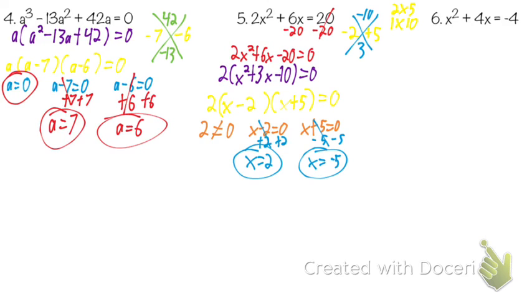Once again: check to see if it equals zero. If it doesn't, make it equal zero. If there's not multiplication, make multiplication by factoring. Then you set up your equations.